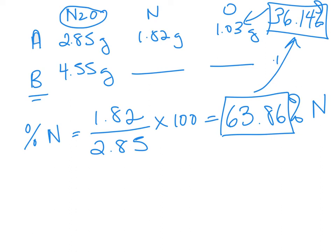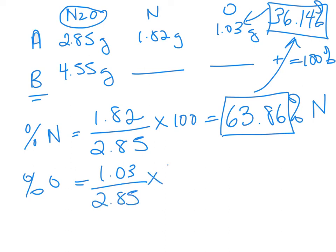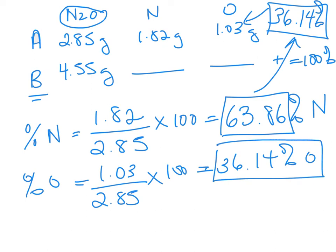Just to confirm: 1.03 grams over 2.85 times 100 is equal to 36.14% oxygen — same result. Two different ways to get the second amount, but when you add them together they equal 100%.